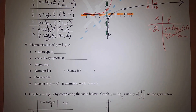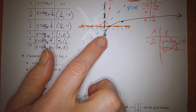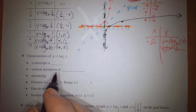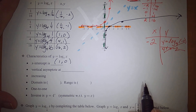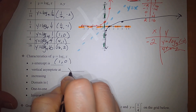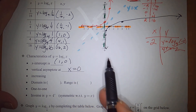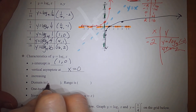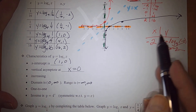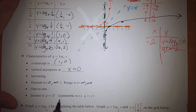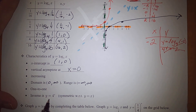Characteristics of the logarithmic function: it has an x-intercept at (1, 0); a vertical asymptote at x equals 0; it is increasing; its domain is from 0 to infinity; its range is all real numbers; it is one-to-one because it passes the horizontal line test; and its inverse is the exponential function discussed in section 6.3.